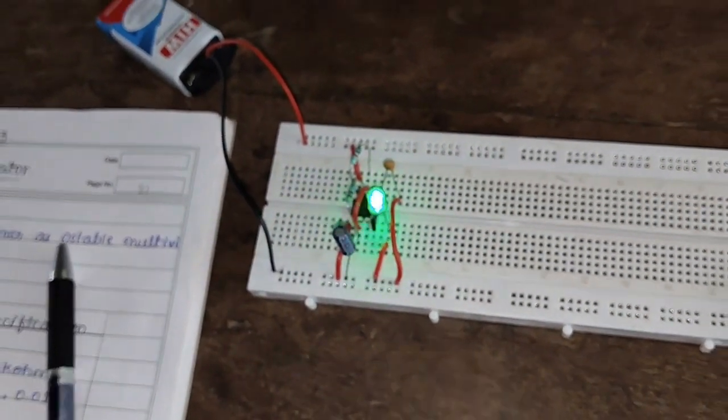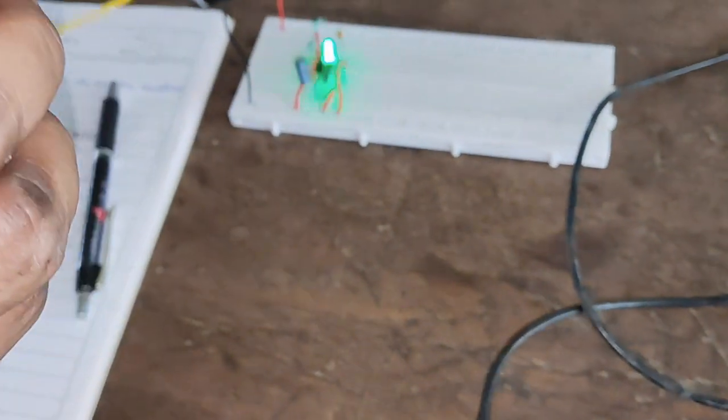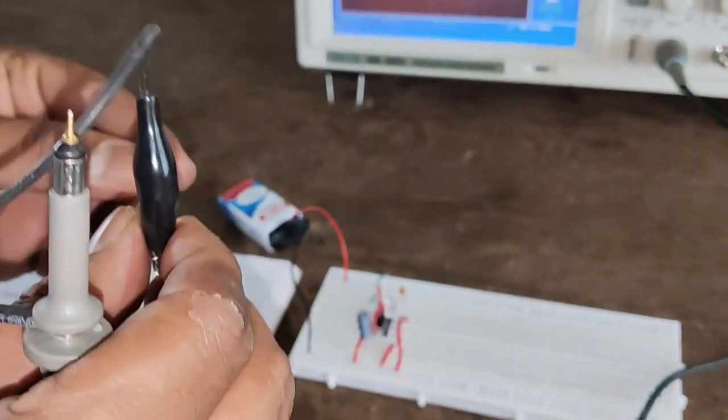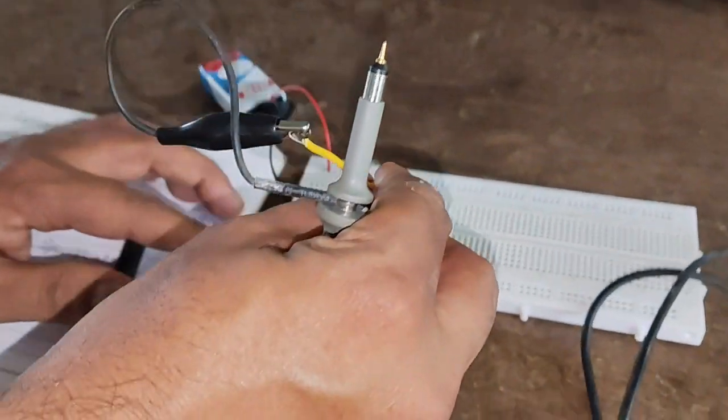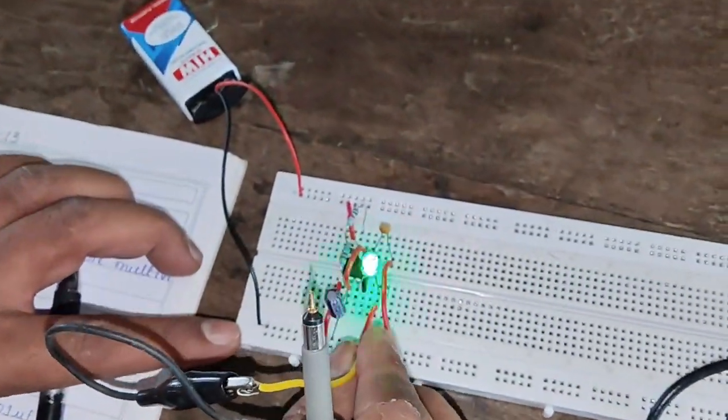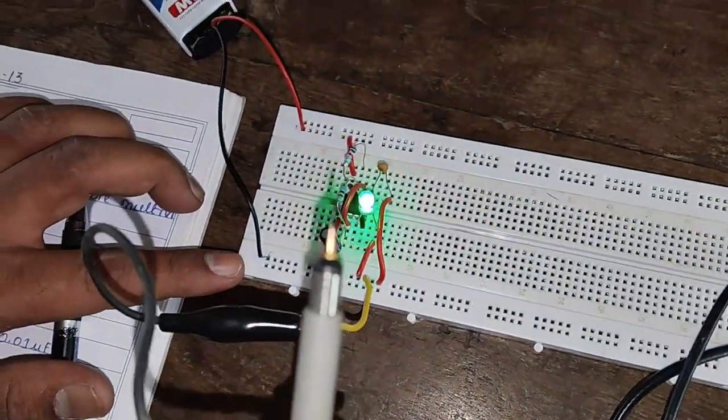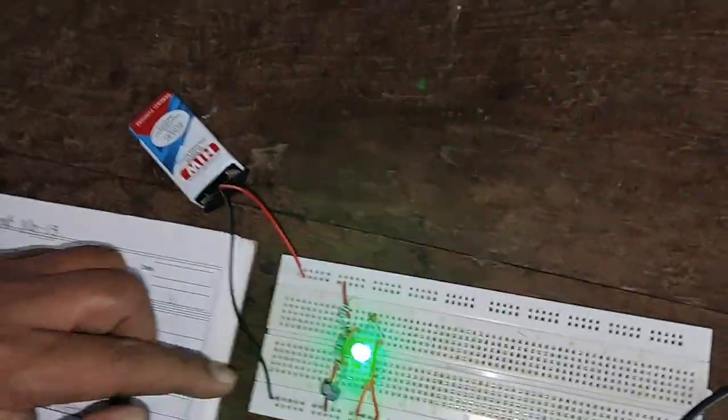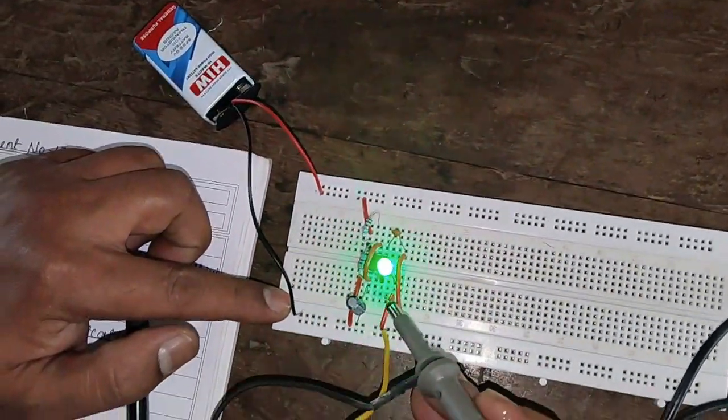Let's connect this to the CRO. I am using the DSO. It is having positive and negative. I will connect this negative to the ground of this circuit, and I will connect this positive to the pin number 3 of 555 timer.